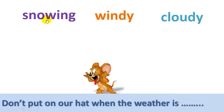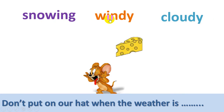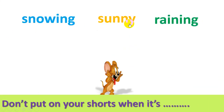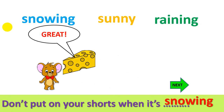Next. Let's see these words: snowing, windy, cloudy. 'Don't put on your hat when the weather is...' Snowing? No. Cloudy? No. Windy — yes, that's right! Don't put on your hat when the weather is windy. Very good. Next. Snowing, sunny, raining. 'Don't put on your shorts when it's...' Let me try snowing. Very good — snowing is the correct answer. Don't put on your shorts when it's snowing.